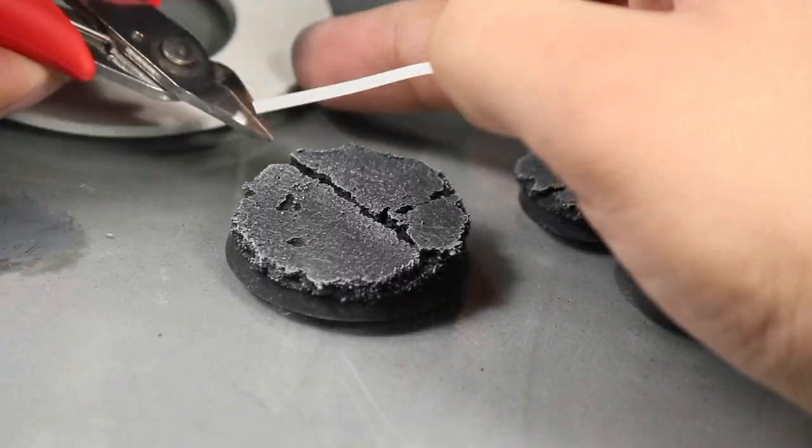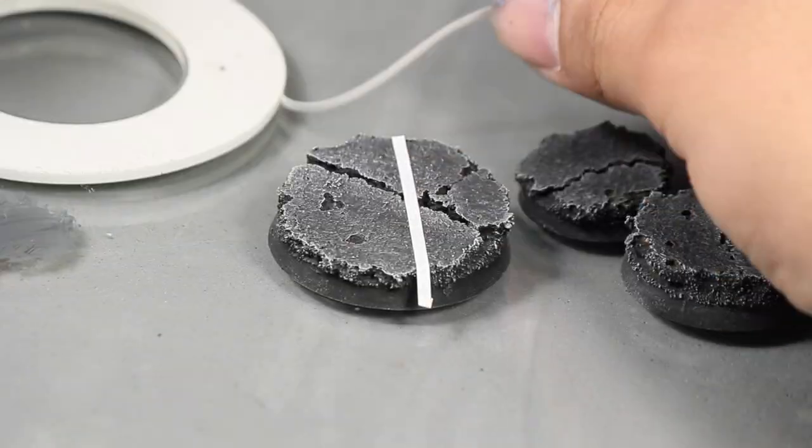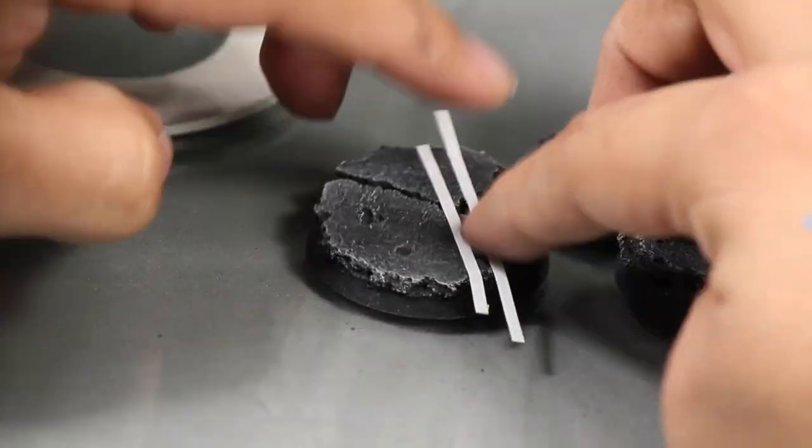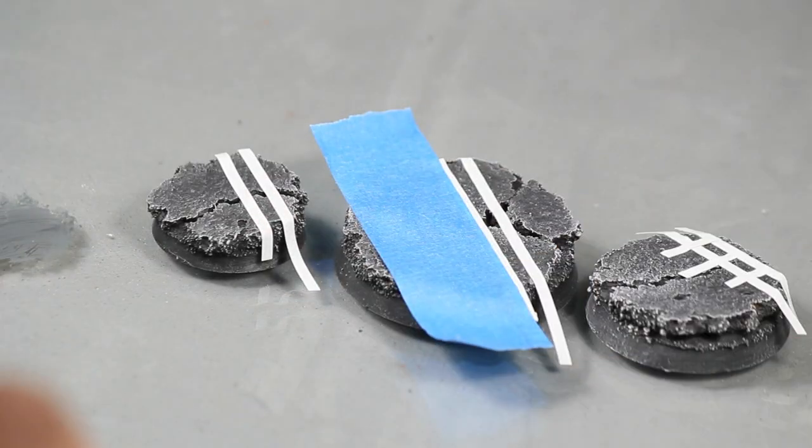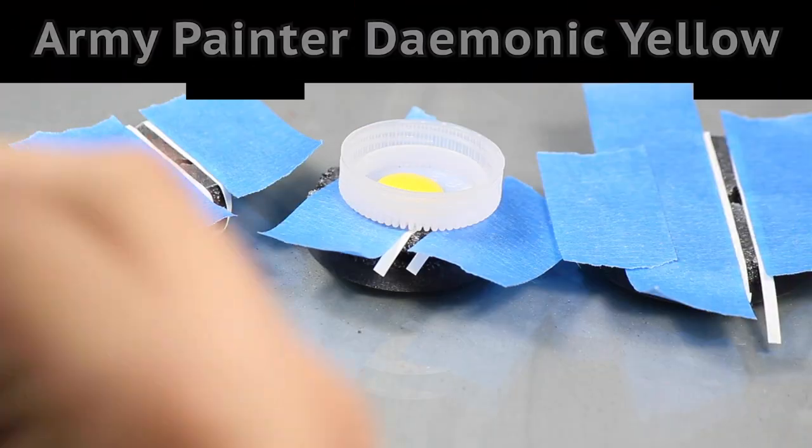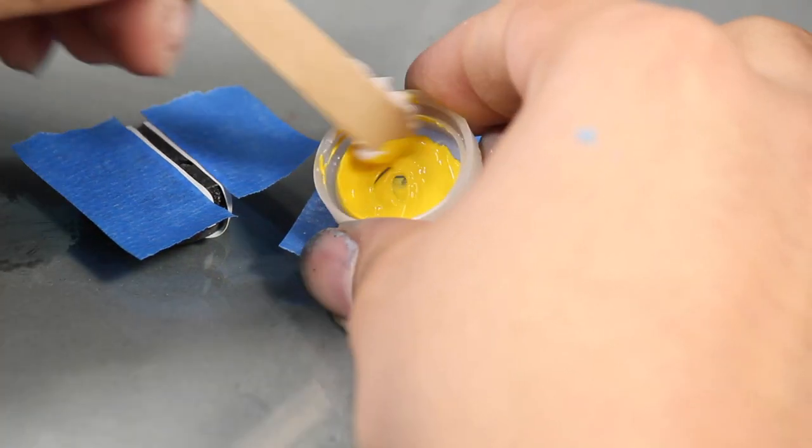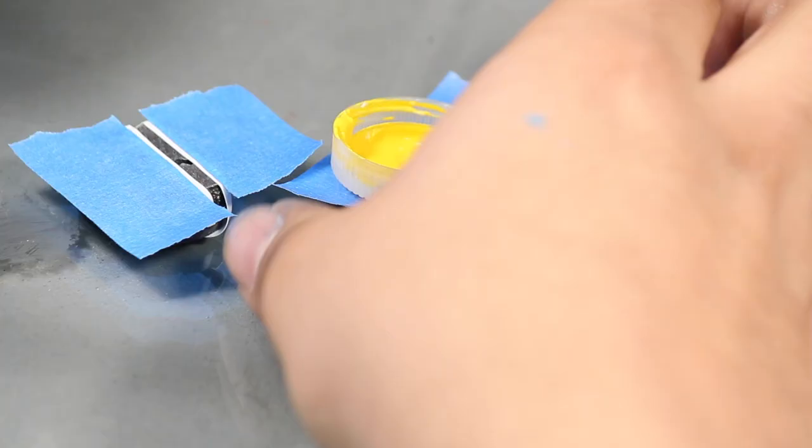Next to really make my road look real I began masking some lane markings. To do this I used a fine 4mm hobby mask and finished off with painters tape. And I wanted the yellow lines to have some texture so I mixed in some spackle to give the paint some real body.